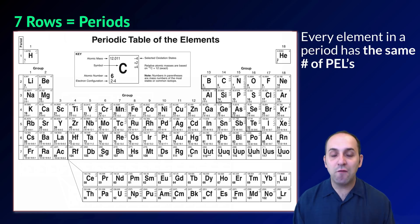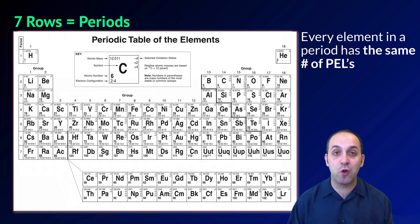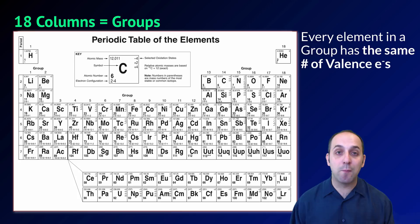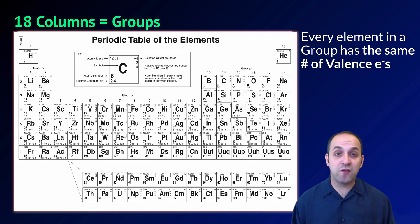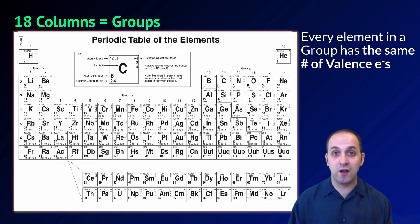The periodic table is broken up into seven rows, which we call periods, and every element in a row has the same number of principal energy levels for its electrons. It's also broken up into 18 columns, which are called groups, and every element in a group has the same number of valence electrons. It turns out that the number of valence electrons is really important — elements with the same number of valence electrons behave very similarly chemically when they bond with other elements.